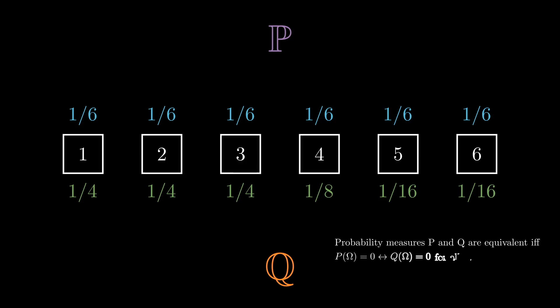Here, we define two probability measures to be equivalent if the probability of one outcome is 0 under one probability measure is 0 under the other probability measure as well. As an example, P and Q are currently equivalent.